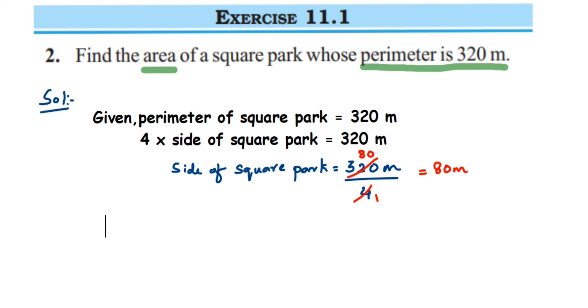So the side of square park is 80 meters. We got the side of the square. Now once we know the side, we can find the area.